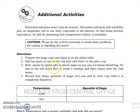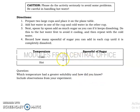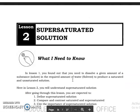Saturated solutions and solubility play an important role in our lives, especially in the kitchen. For your additional activities, you do this activity. So you're going to prepare two lunch cups and place it on the plain table. And just follow, or use the cold and at the same time for the other cup use hot. And you are going to just follow the procedure here and answer the questions which temperature had a greater solubility and how did you know, include observations from your experiment. So use a table for this output.